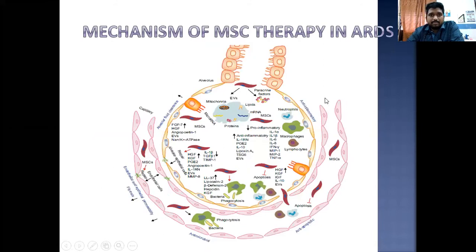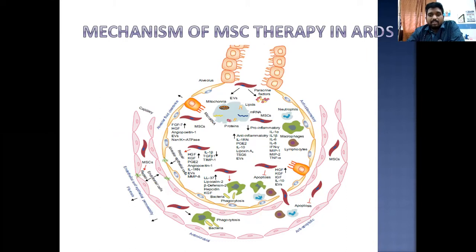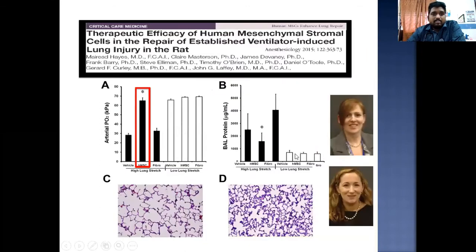The mechanism of mesenchymal stem cell therapy is depicted in this image. You can see the alveolus — MSC therapy puts a check on alveolar fluid clearance, repairs alveolar epithelial cells, improves phagocytosis to control bacterial proliferation, decreases apoptosis, and ultimately maintains the integrity of the alveoli and improves tight junctions, preventing further damage.